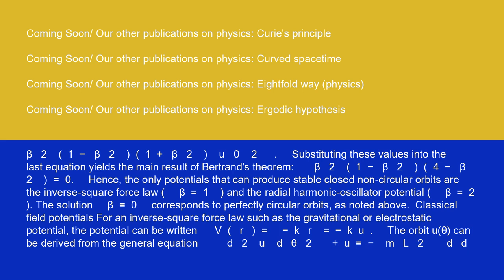Substituting these values into the last equation yields the main result of Bertrand's theorem: β²(1 minus β²)(4 minus β²) equals 0. Hence, the only potentials that can produce stable closed non-circular orbits are the inverse square force law, β equals 1, and the radial harmonic oscillator potential, β equals 2. The solution β equals 0 corresponds to perfectly circular orbits, as noted above.